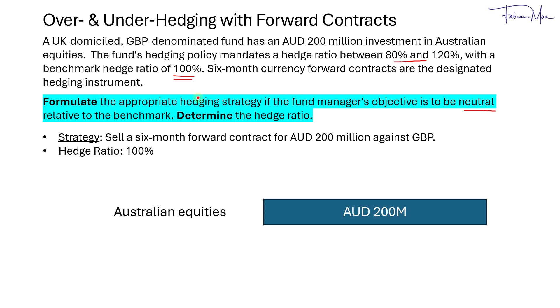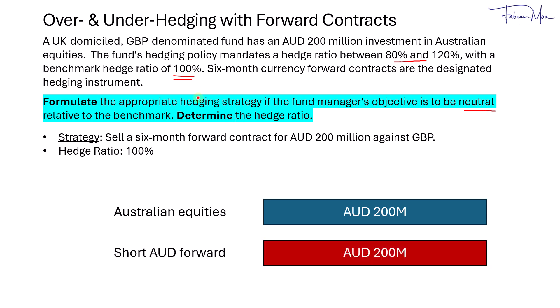To illustrate this visually, we have 200 million Australian dollars of equities. We would hedge it with a short forward position in Australian dollars, with the notional equal to the market value of the Australian equities. For example, if the Australian dollar were to weaken, there would be losses on the Australian equities from the perspective of the UK domiciled fund, because when you convert a weaker Australian dollar back to British pound, the returns would be lower. So that's considered a currency loss.